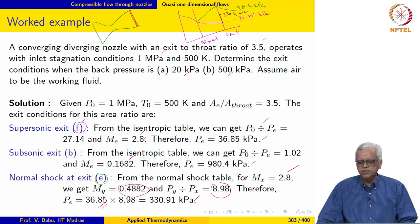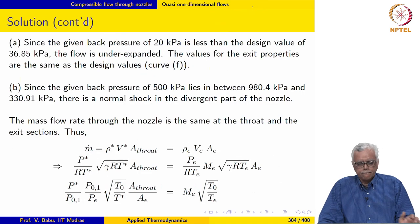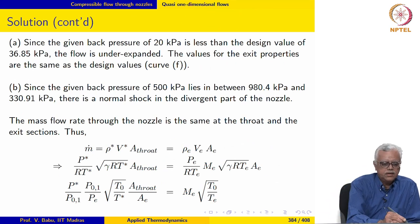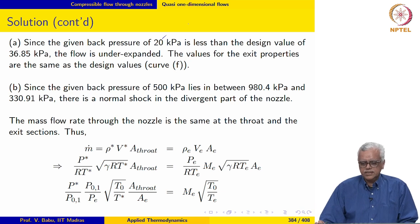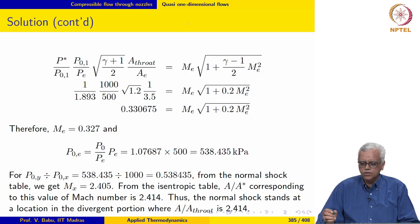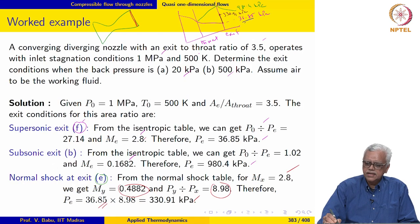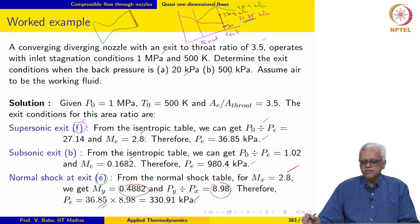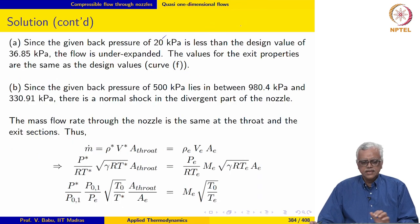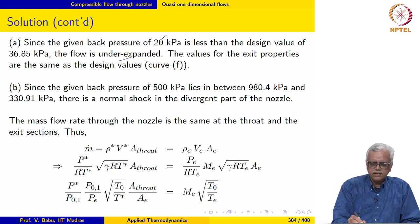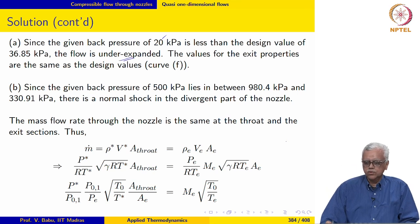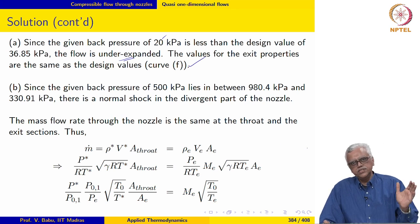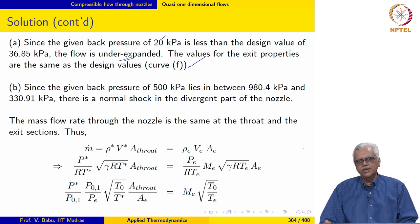For Case A, the given back pressure is 20 kilo Pascal, which is less than the design value of 36.85 kPa. This means the flow is under-expanded — there is more expansion that needs to take place outside the nozzle — and the values for exit properties are the same as the design values. There is no change in the flow field inside the nozzle.